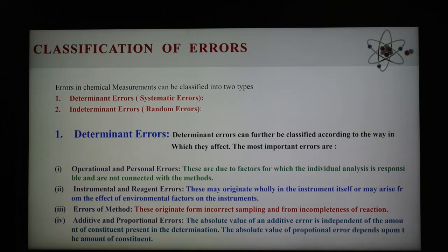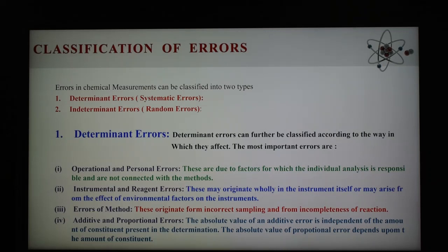The fourth type is additive and proportional error. The absolute value of additive error is independent of the amount of constituent present. Examples of additive error include loss in weight of crucible in which the precipitate is ignited, error in weight, solubility of precipitate, and titration error. For proportional error, the absolute value depends upon the amount of constituent. Proportional error may arise from an impurity in the standard substance, leading to an incorrect value for molarity in the standard solution, and may increase with the amount of constituent present.